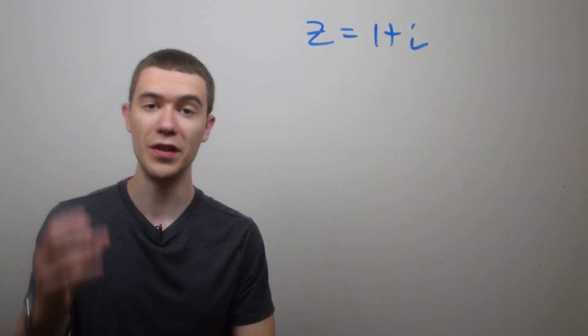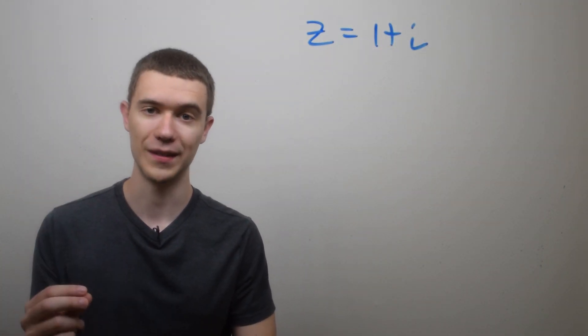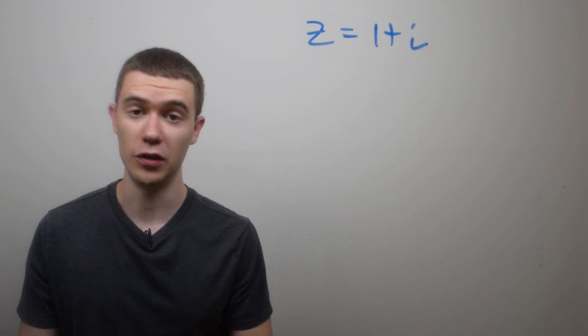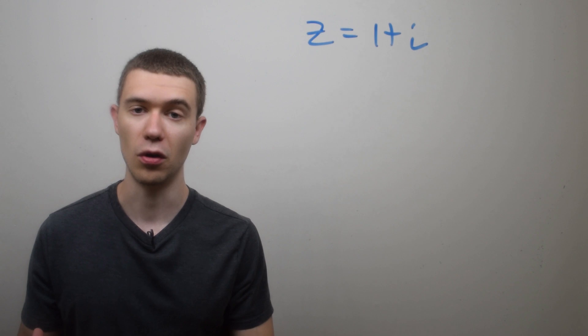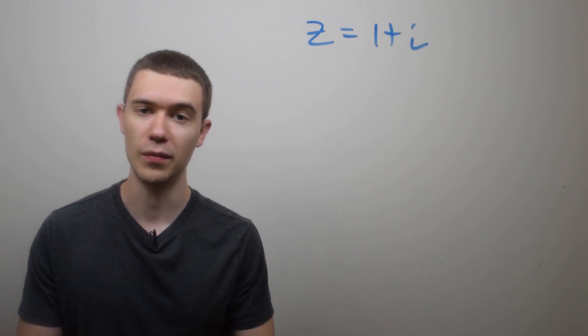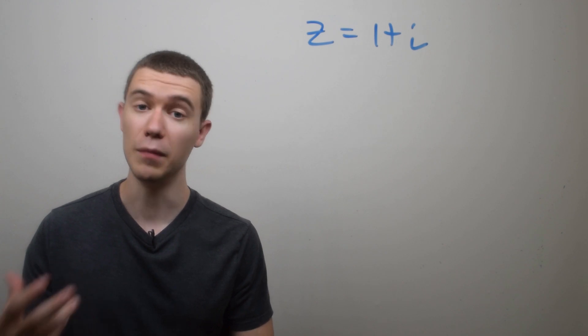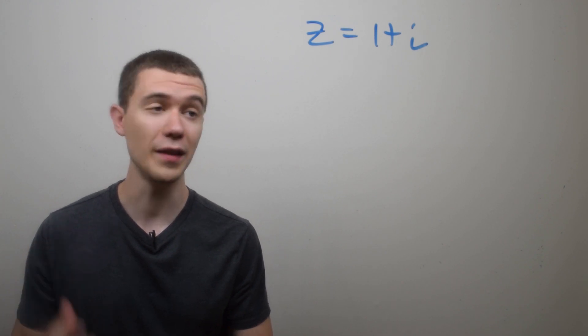Let's find the polar form of this complex number, 1 plus i. So what we need is we need to know what the modulus of this number is, so we can find r. We also need to find the argument, the angle theta, that this number makes with the x-axis. It might be helpful for you to plot this.